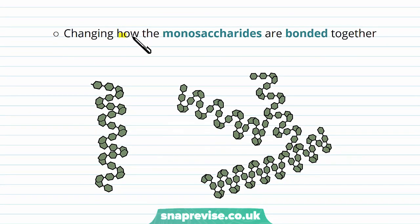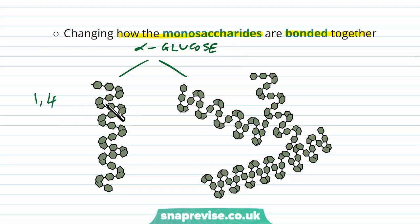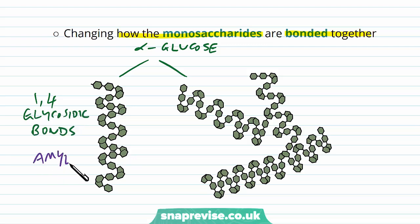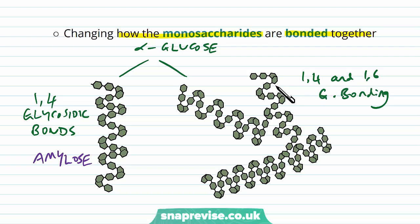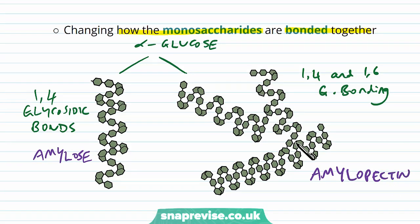We can also change not only the monosaccharide, but how the monosaccharides bond together. For example, in both these cases we have alpha glucose as the monosaccharide, but with 1,4 glycosidic bonding we get amylose, whereas with both 1,4 and 1,6 glycosidic bonding we get amylopectin. By having different types of bonding present, we can make different types of molecules. Changing different features of polysaccharides gives them multiple different properties and very different functions.